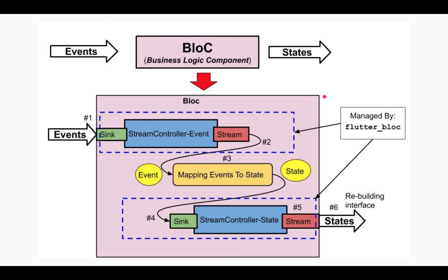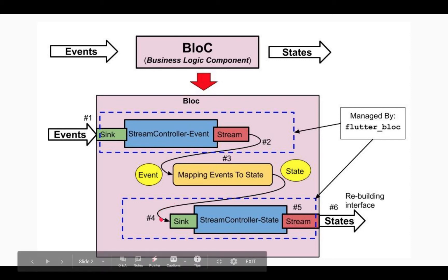This is the same diagram we saw in the last BLoC pattern video. In that implementation, the event comes in and the event stream controller sink takes those events; they go into a business logic component which maps events to state and emits a state. The state goes into the state stream controller sink, and in the sixth step the interface is rebuilt using that new state. So we were managing all six steps by ourselves.